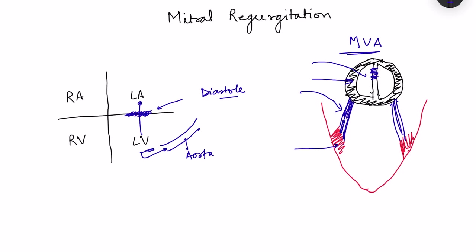The papillary muscles are attached to the chordae tendineae, and the adjacent myocardium is also part of the mitral valve apparatus — if the myocardium is abnormal, the papillary muscles will not be able to hold the chordae tendineae. So there are five components of the mitral valve apparatus: the leaflets, the annulus, chordae tendineae, papillary muscles, and the adjacent myocardium. A problem anywhere in this apparatus can lead to mitral regurgitation.